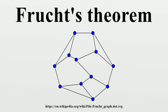Infinite groups and graphs: For infinite graphs, Izbitsky extended each of these results to show that there were uncountably many graphs realizing any symmetry group. Finally, DeGroote and Sabagucci independently proved that any group could be realized as the group of symmetries of an infinite graph.